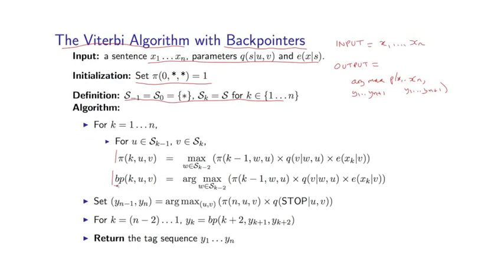This is just an additional piece of bookkeeping recording the argmax at each point. So once we've filled in these pi values and the back pointer values, we can actually find the highest scoring tag sequence by going backwards through the sequence at the end of this algorithm. Here's how this works.